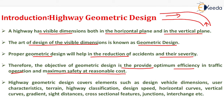Highway geometric design generally covers elements such as design vehicle dimensions — length, width, and height of vehicle — user characteristics such as reaction time, terrain classification whether plain, mountainous or steep, highway classification whether express highway, national highway, state highway, major district road, other district road, or village road, and design speed along the particular highway.